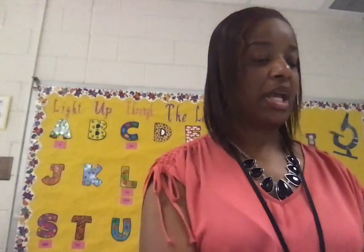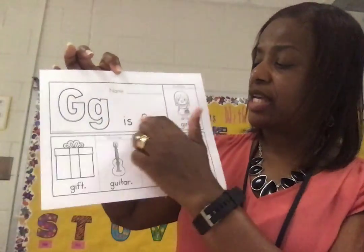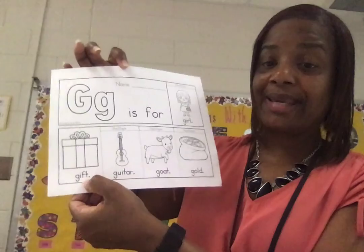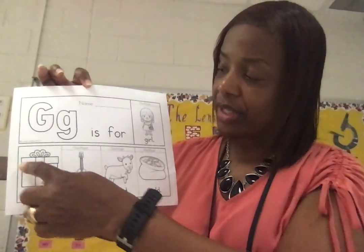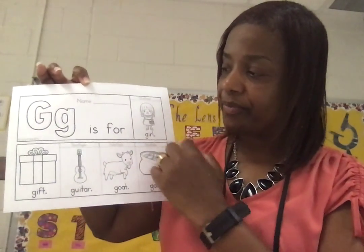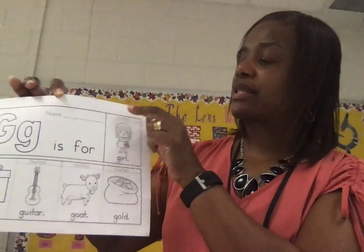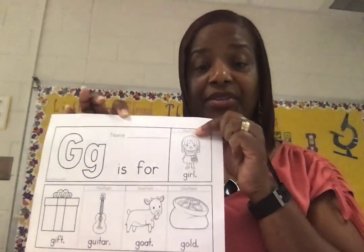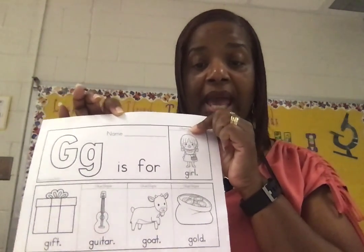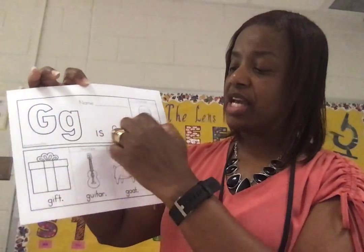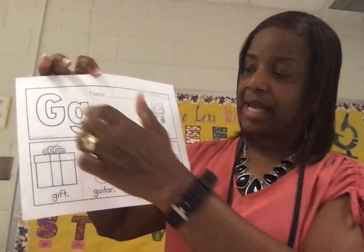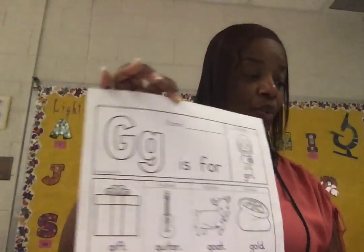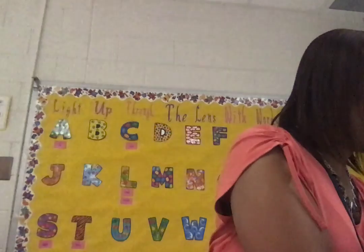Everybody take a look — it says 'G is for,' there's a girl, you see gift, guitar, goat, and gold. Your job is to color these pictures all the way across, cut them out, and then glue or staple — if you have a stapler at your house, let's staple it at the top. When you finish it's going to say: G is for gift, G is for guitar, G is for goat, G is for gold.